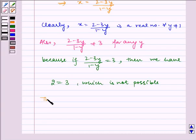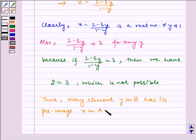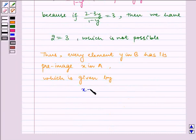Thus, every element y in B has its pre-image x in A, which is given by x is equal to (2 minus 3y) by (1 minus y). Therefore, f is onto.